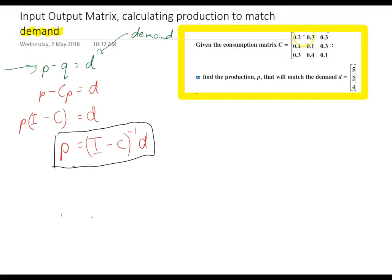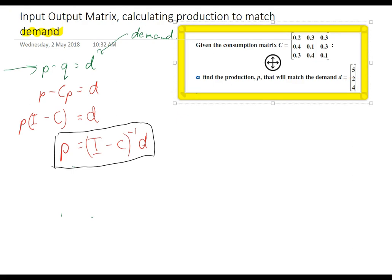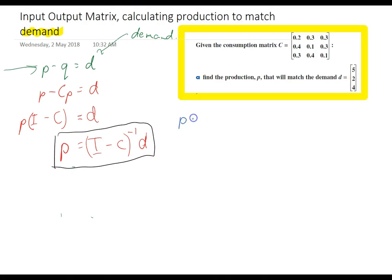Next question, given the consumption matrix, this find the production that will match the demand 5 energy, 2 raw materials 4 manufactured goods. So, it's as simple as putting it into our formula here P equals.